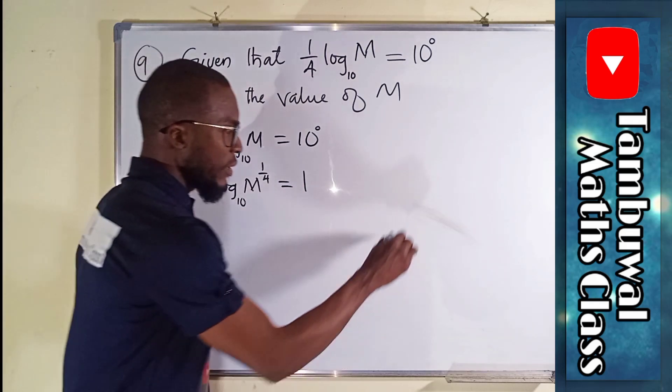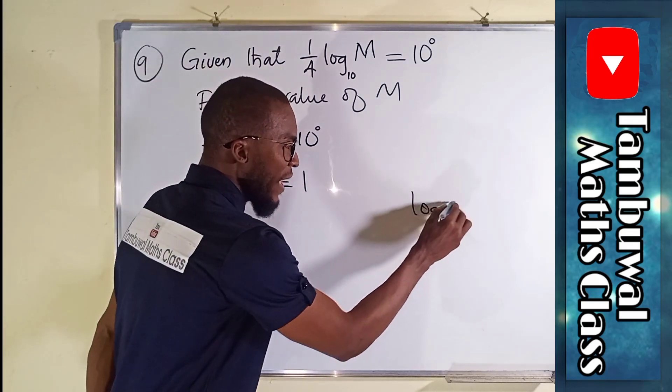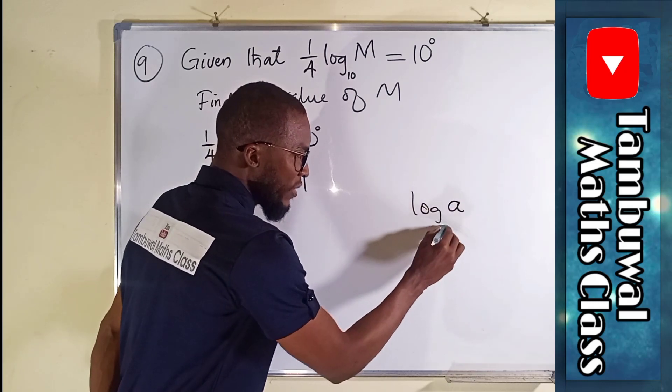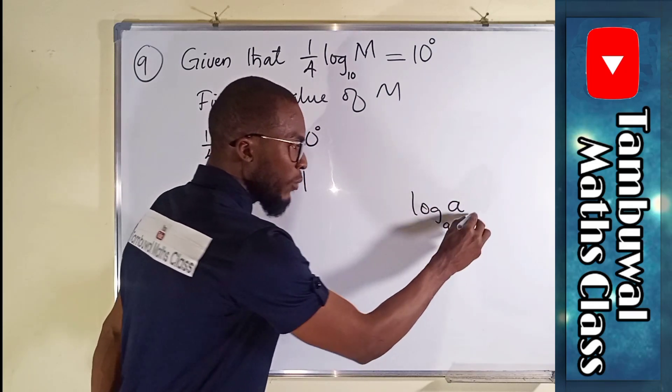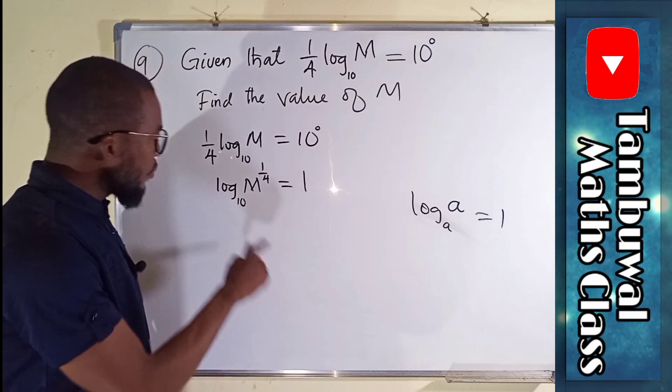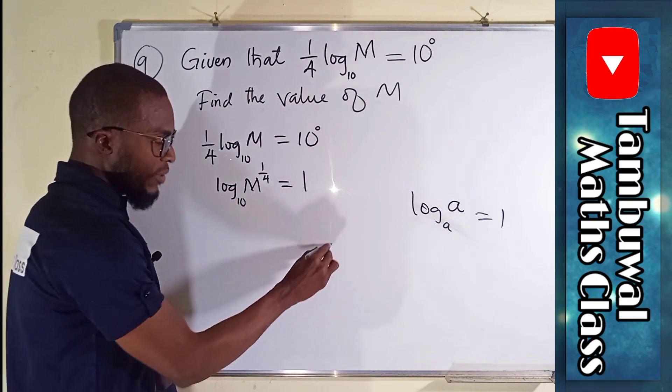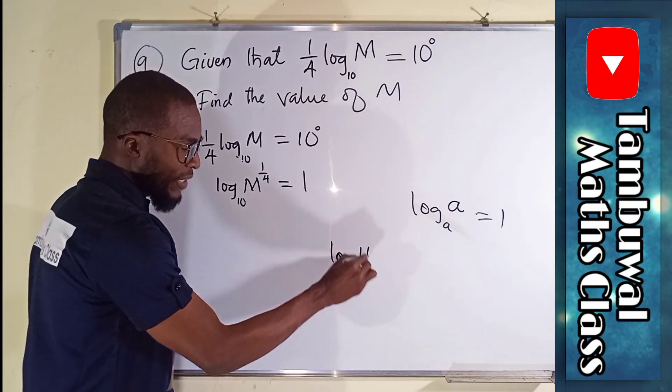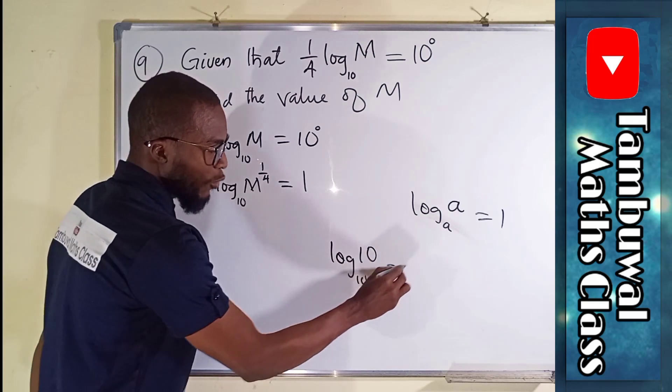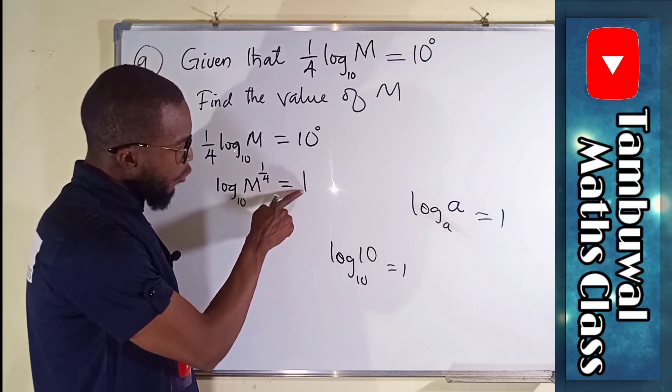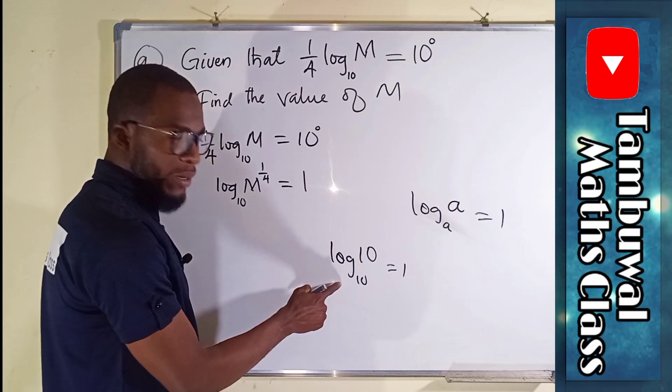In laws of logarithm, log of any number, call it A, with the same base as the number will give us 1. Since we have log to the base 10 here, it means that log of 10 base 10 is equal to 1. So instead of 1, we can write log of 10 base 10.